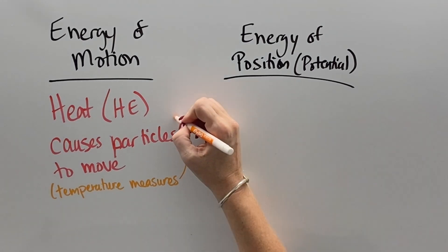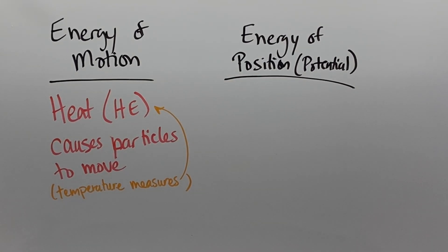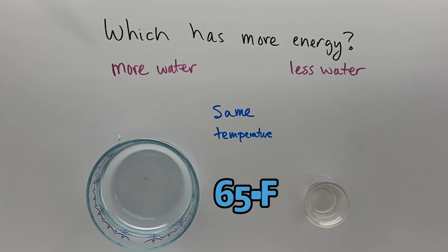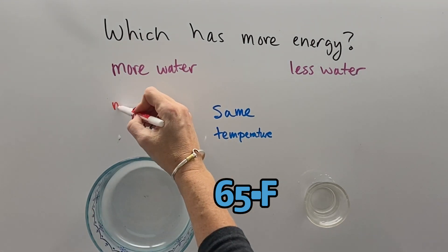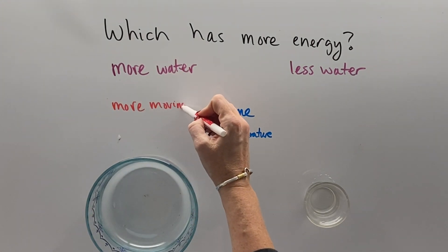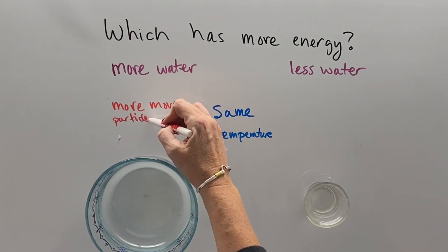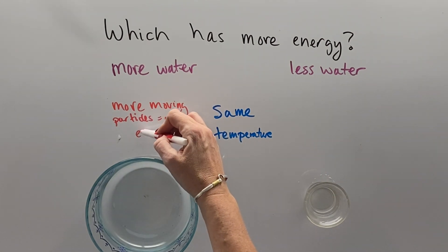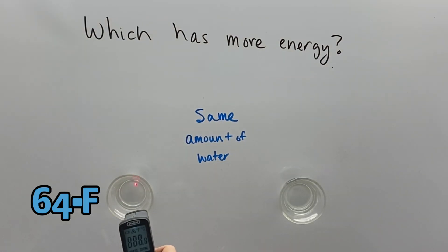And temperature is our measurement of that heat energy and that movement of particles. If you have two containers of water at the same temperature, all the particles are moving at the same speed. That's what the temperature means. But the container with more water has more moving particles. Therefore, it takes more heat energy to get more particles to move at the same speed.